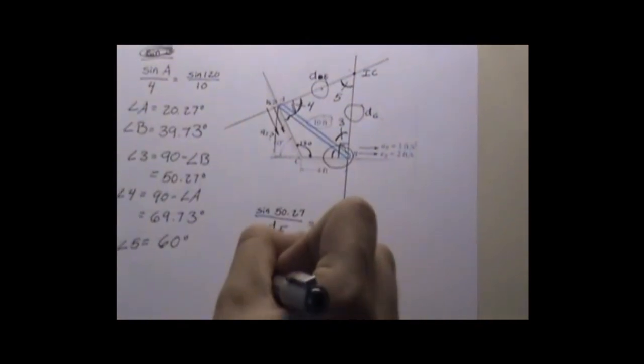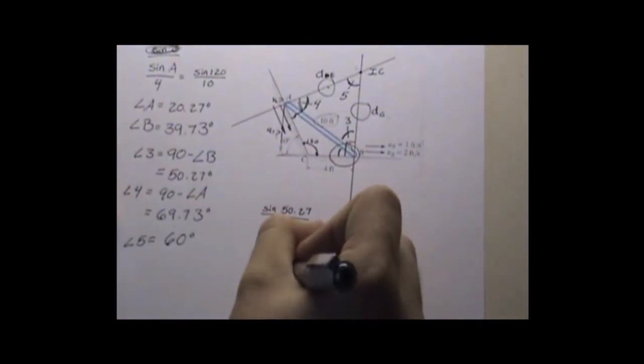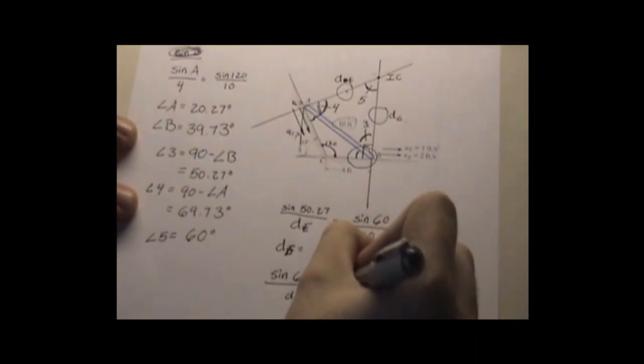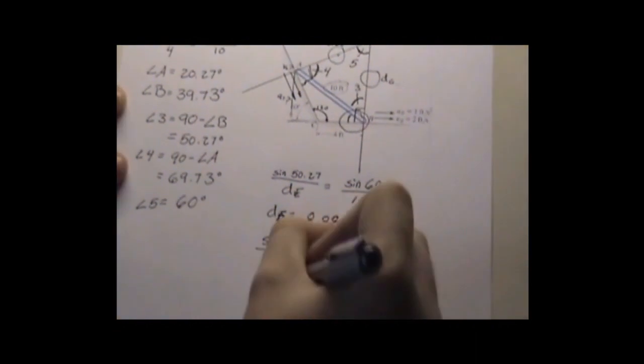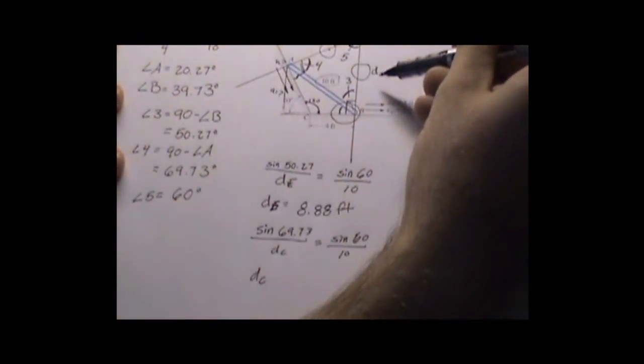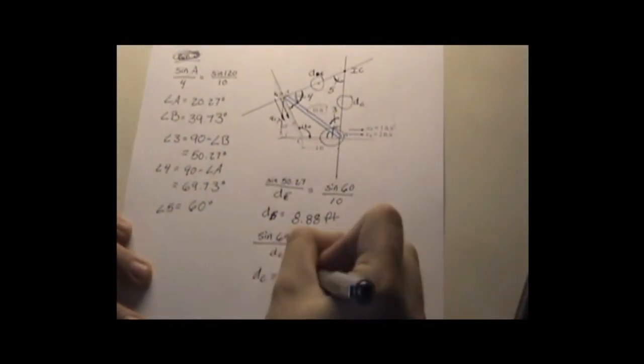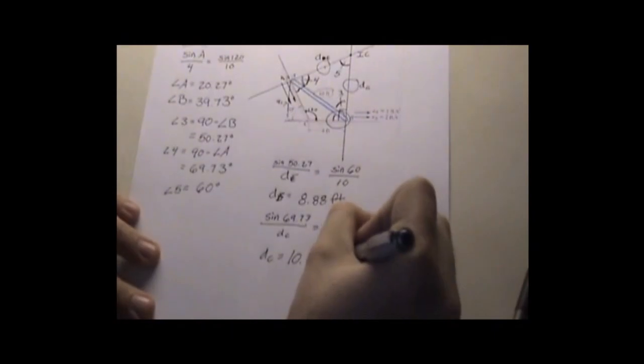Doing the same thing as right here, sine of 69.73 over distance C equals sine of 60 over 10. DC, which is this side right here, ends up equaling 10.83 feet.